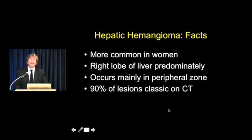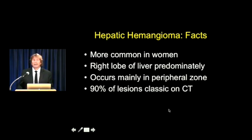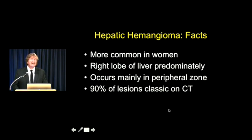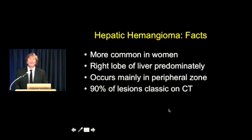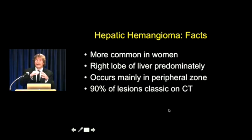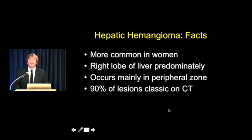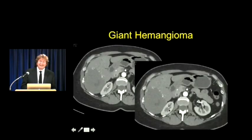Next, hemangiomas. Hemangiomas are often a great mimicker, but very easy to recognize in probably 90-plus percent of cases. Hemangiomas are of no clinical importance. They can get very large - over 5 cm they're called giant hemangiomas. Theoretically hemangiomas can rupture and bleed; the only ones I've seen bleed were incidentally biopsied. Hemangiomas are more common in women, classic location is the posterior right lobe, and a non-contrast CT can look just like a metastasis or any tumor. Hemangiomas typically are in the periphery of the liver, are not exophytic, and about 90% are classic on CT.